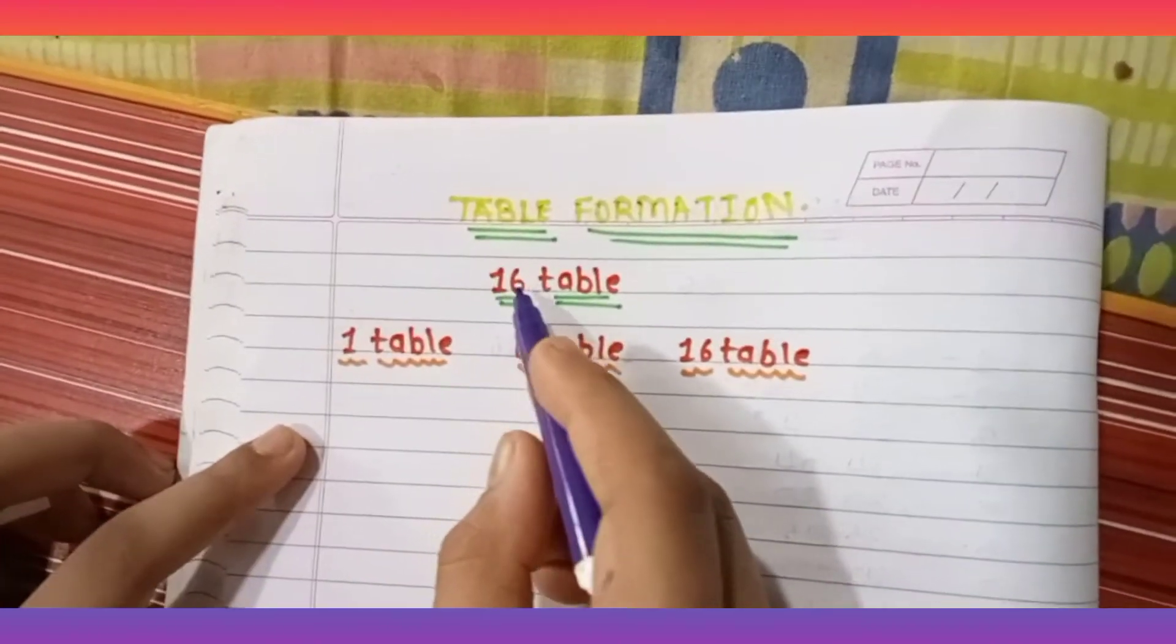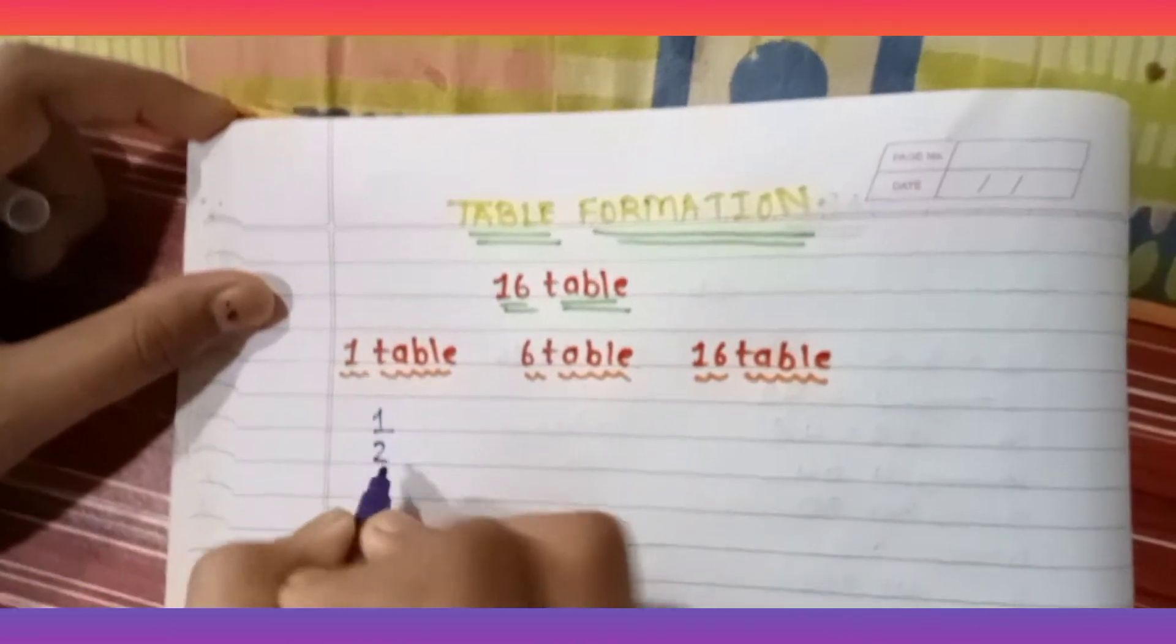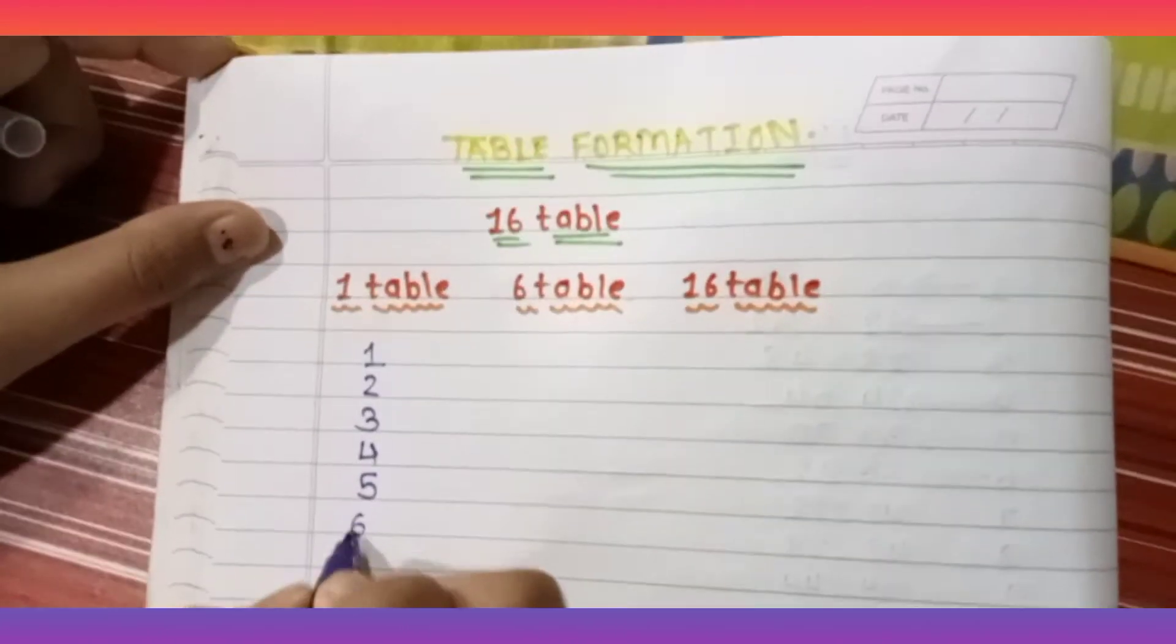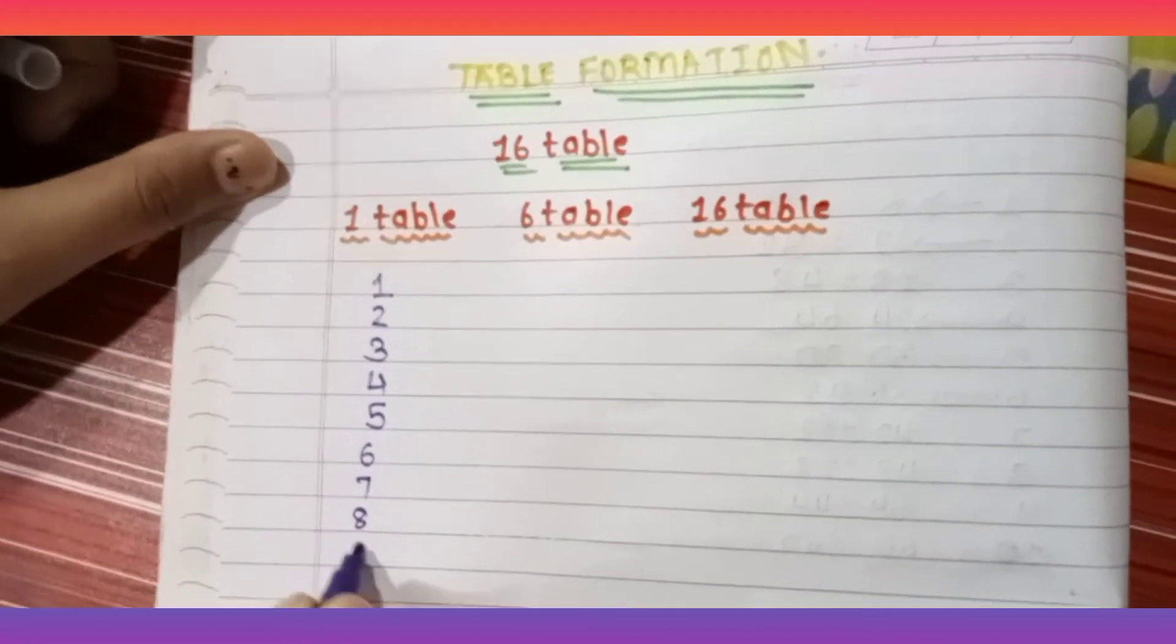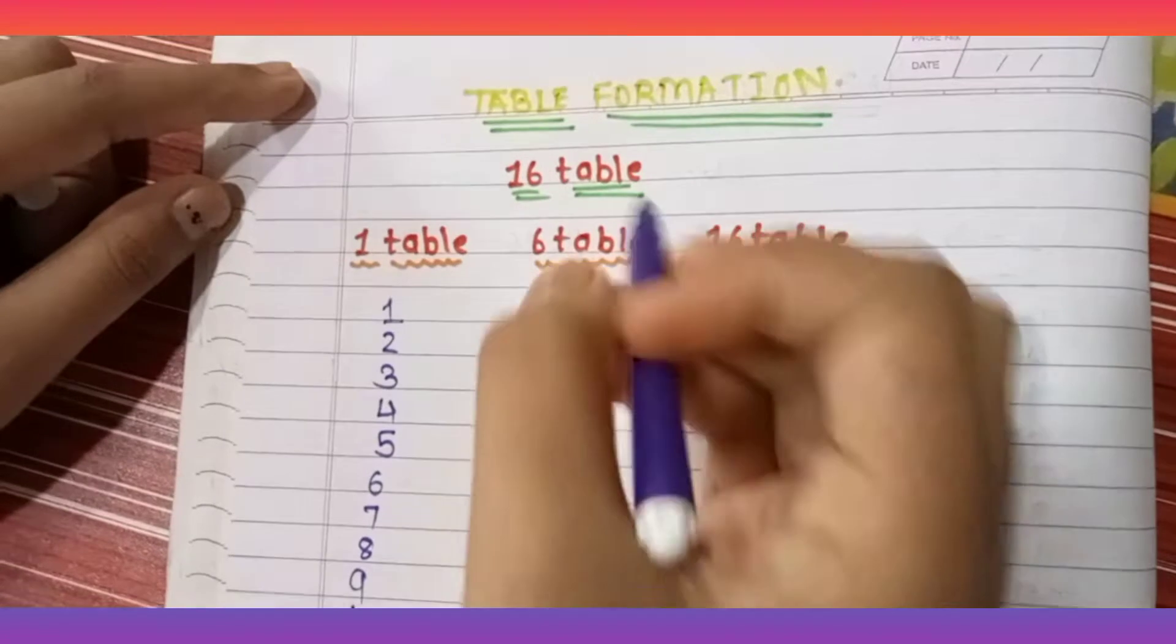Now if you want to make the 16 table, what we will do first is write the 1 table: 1, 2, 3, 4, 5, 6, 7, 8, 9, and 10. So we are done with the 1 table.